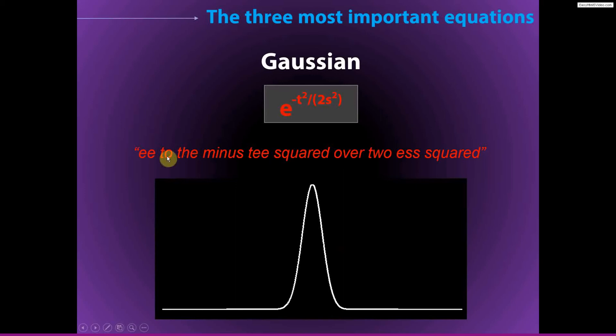The Gaussian is pronounced e to the minus t squared over 2s squared. The e here is the natural exponent. T again refers to time for time series analysis, and like with the sine wave, it could also refer to space or any other dimension, but here we'll use it as time.